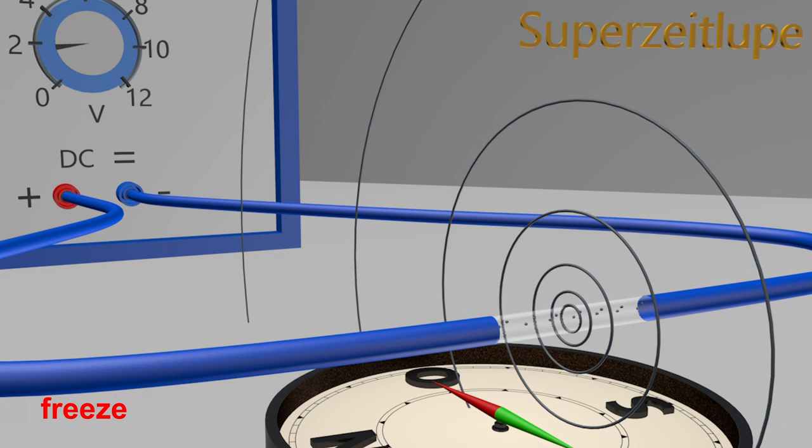Therefore, the compass needle is deflected according to the magnetic field around the power cable. It is important for further understanding that we can show at this point that the origin of magnetism lies with the electrons. Moving electrons create a magnetic field.